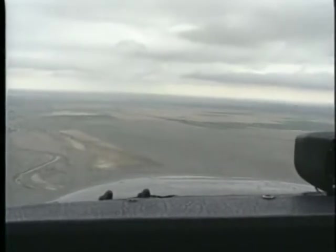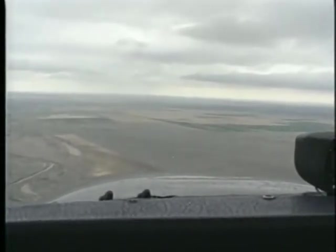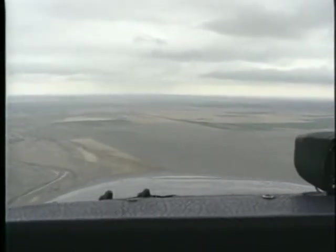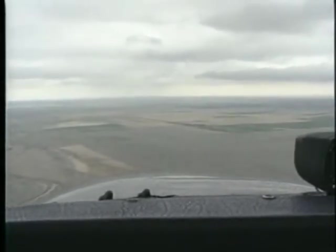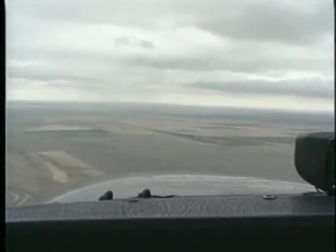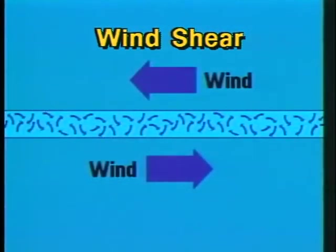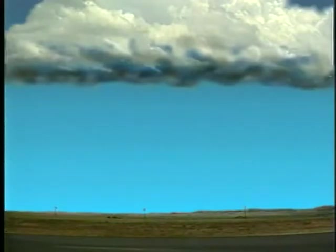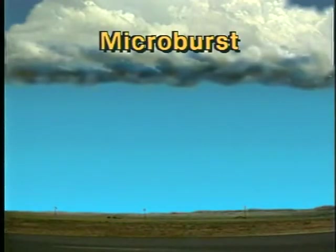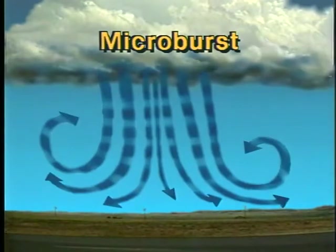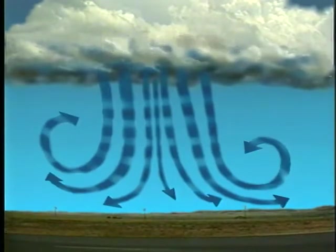The turbulence associated with thunderstorms varies in intensity from light annoying bumps to severe jolts that can damage your airplane and injure its occupants. To minimize its effect slow to maneuvering speed or less. One form of turbulence called wind shear is a sudden shift in wind speed or direction. It can occur at any altitude and in a vertical or horizontal plane. Wind shear is often associated with a more serious phenomenon called microburst. A microburst is an intense localized downdraft which descends from the base of a convective cloud.